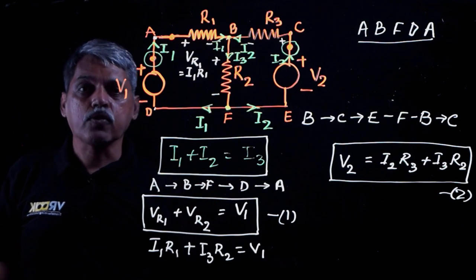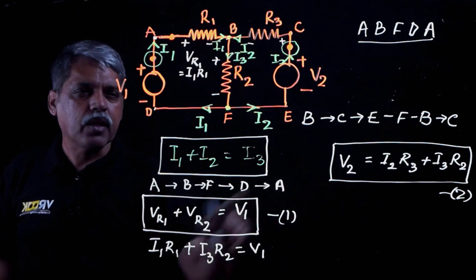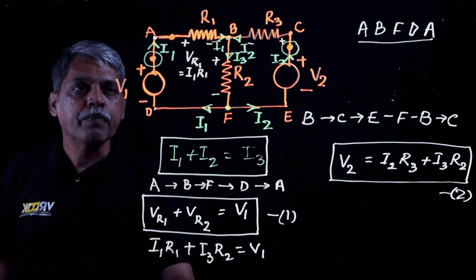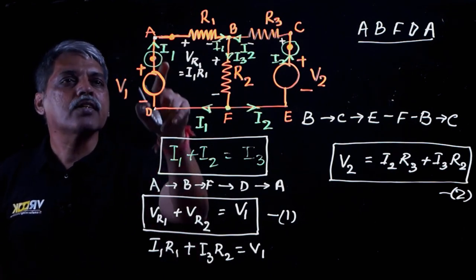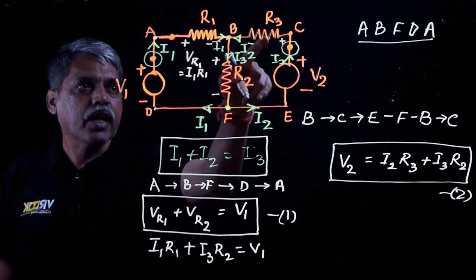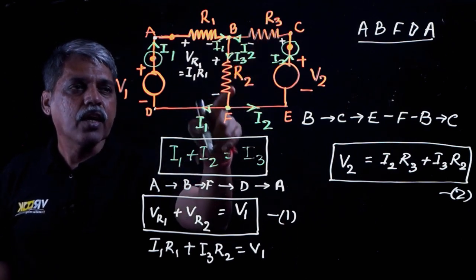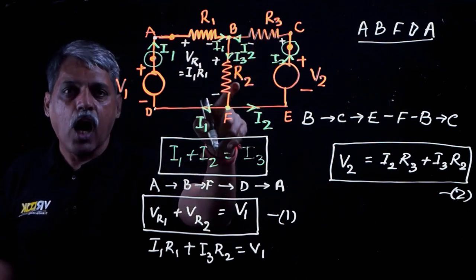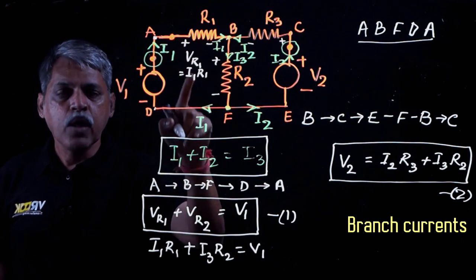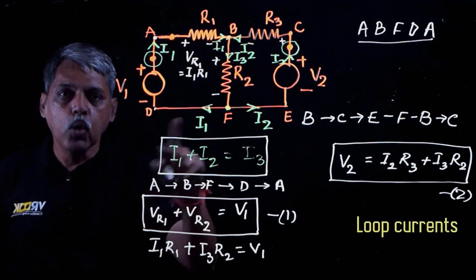This is the approach of applying Kirchhoff's voltage law to develop mathematical equations in terms of currents I1, I2, and I3. In this diagram, I1 is the current through resistor R1, I2 is the current through resistor R3, and I3 is the current through resistor R2. These are called branch currents. We can also develop Kirchhoff's voltage law equations in terms of loop currents.